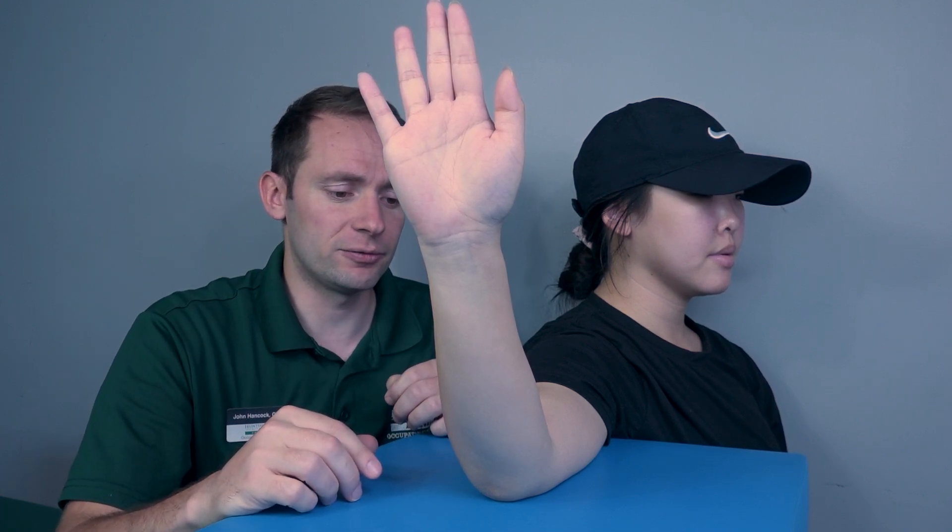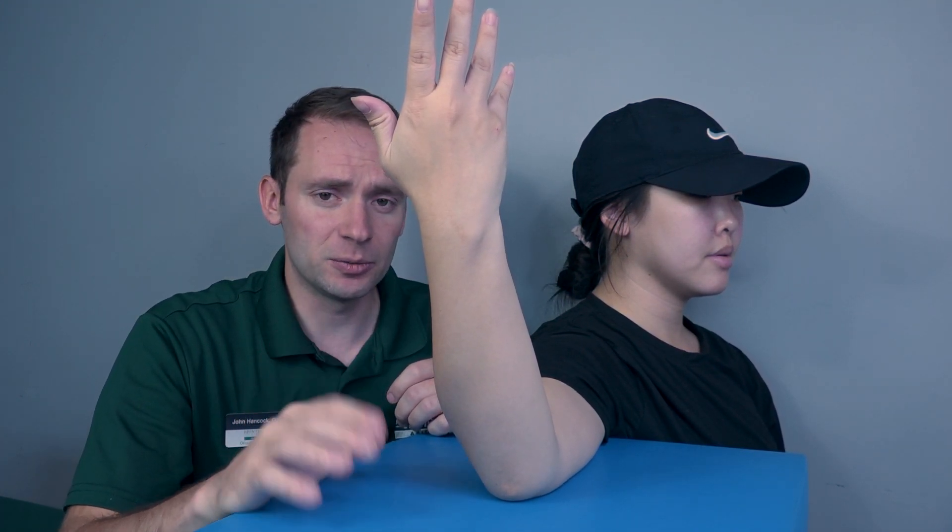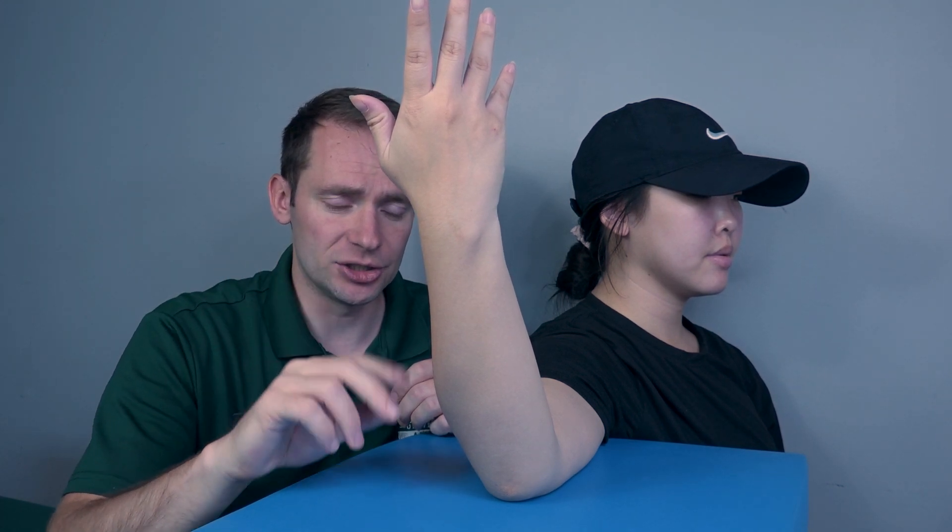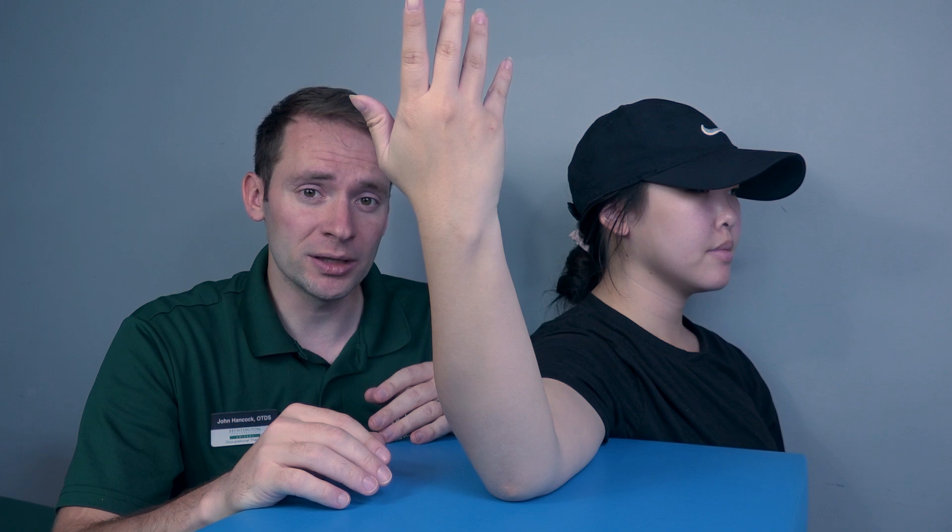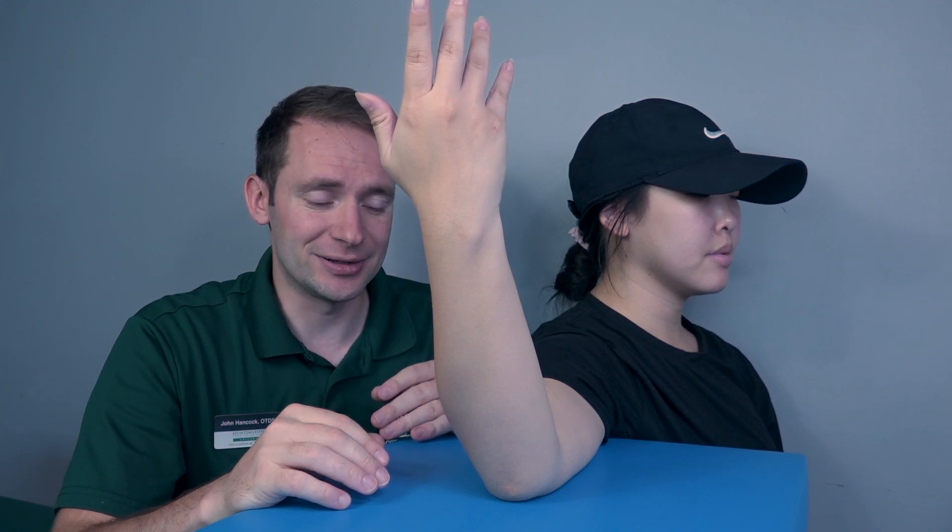To test for the supinator, I will have her pronated to begin with, so palm facing away from her, and then I will ask her to bring her palm towards her. Go ahead and do that for me please. Once again, any movement whatsoever, that is going to be a two, as she just demonstrated. If there's no movement, I will want to palpate for the supinator, but this muscle is deep and it is very difficult to get to.